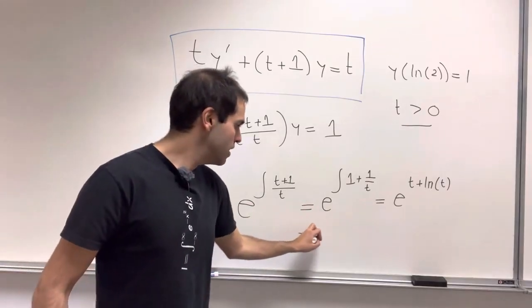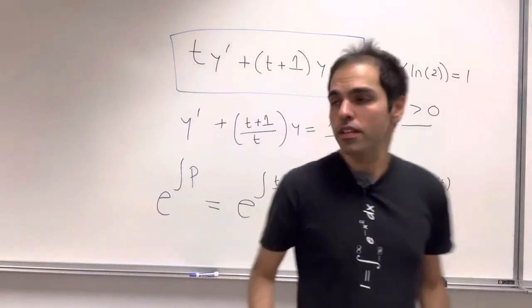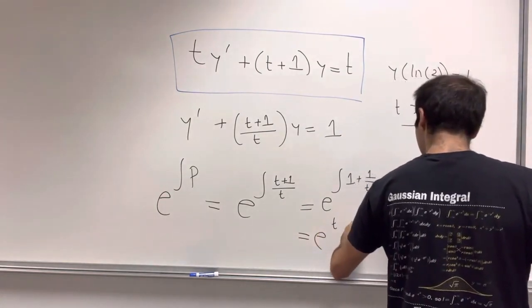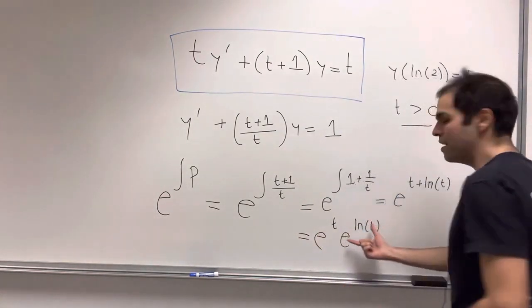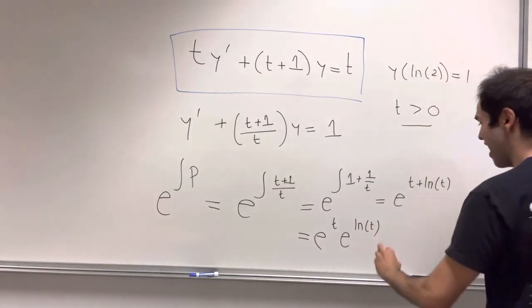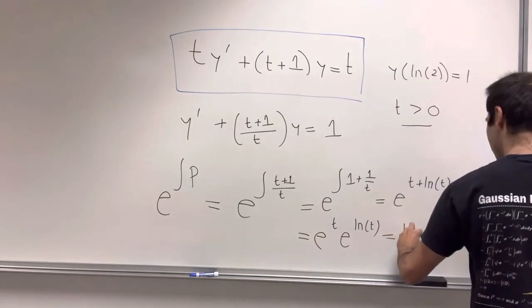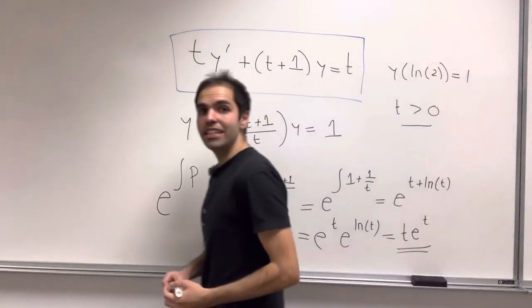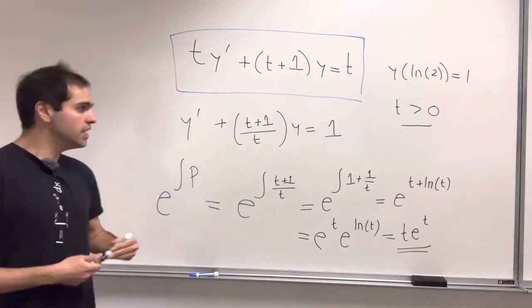So one is enough, but we can simplify this a bit further. So then what you get is e^t times e^ln(t). And remember, ln is a destroyer of e, so e^ln(t) is just t. So integrating factor here is quite easy. It's t*e^t.